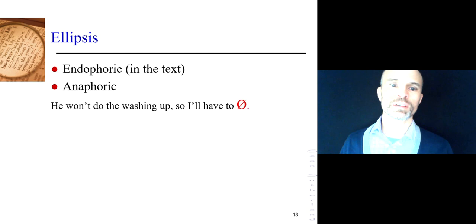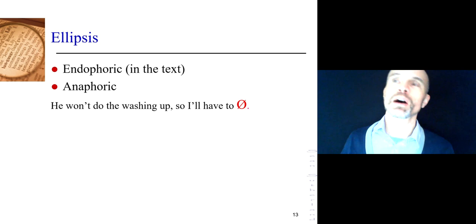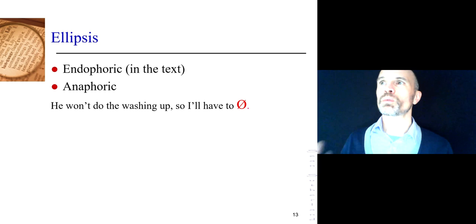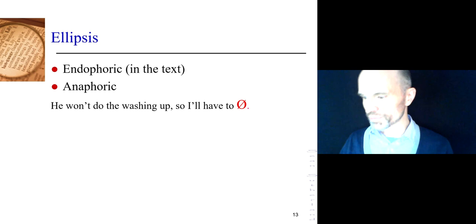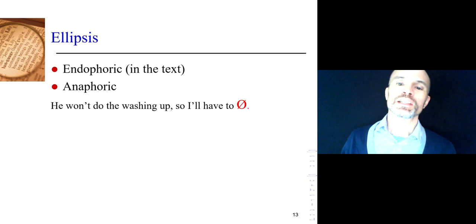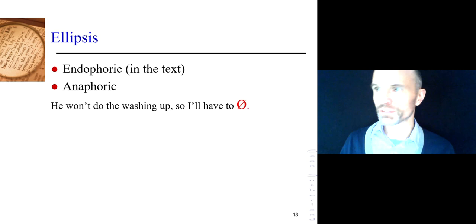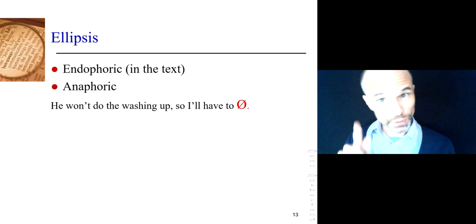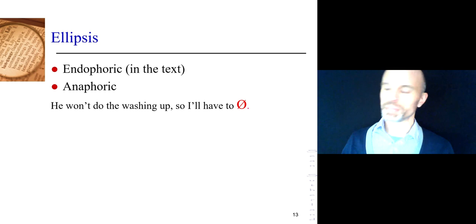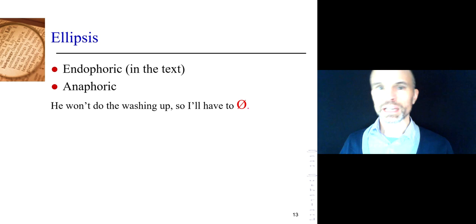Here's another anaphoric example: 'He won't do the washing up, so I'll have to.' Imagine just hearing 'so I'll have to' — you'd recognize there's a subject 'I' and 'will have to,' but there's no main verb. I'll have to what? 'Will' is a modal verb; 'have to' is another kind of modal; but you need the main verb. Anyone who heard the whole thing would know it means: 'he won't do the washing up, so I'll have to do the washing up.' That ellipsis after 'to' is interpreted by looking back anaphorically at the preceding co-text.